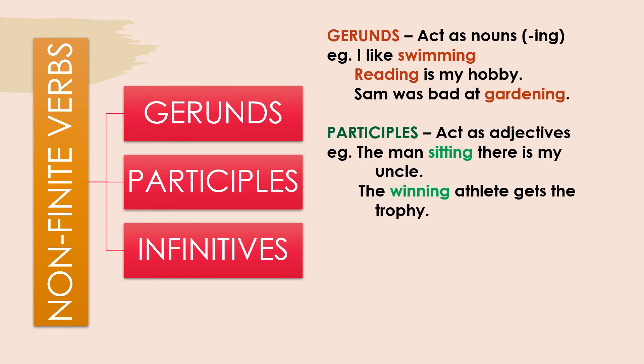Participles may also be -ing words, but they don't act as nouns — they act as adjectives, as describing words. For example, 'The man sitting there is my uncle.' 'Is' is the main verb. What describes the man? The word 'sitting.' It's an -ing verb, but the action is not sitting — it just describes the man, and that is a participle. Similarly, an -ing word describing an athlete — the main verb is 'gets.' An -ing word that describes is known as a participle. You can watch my video on participles for more details.